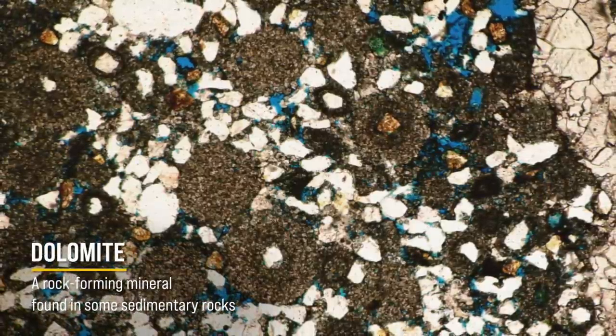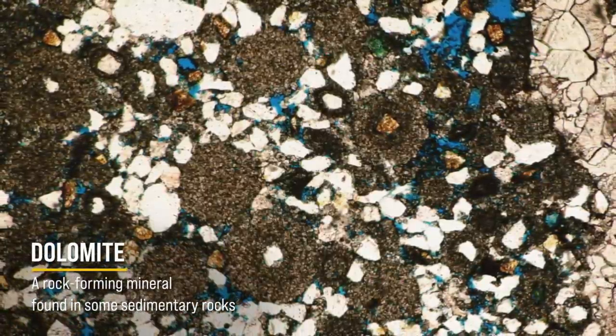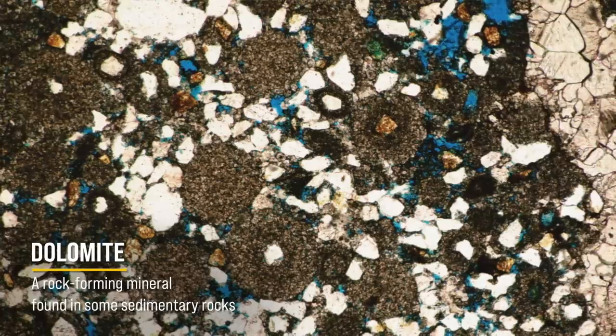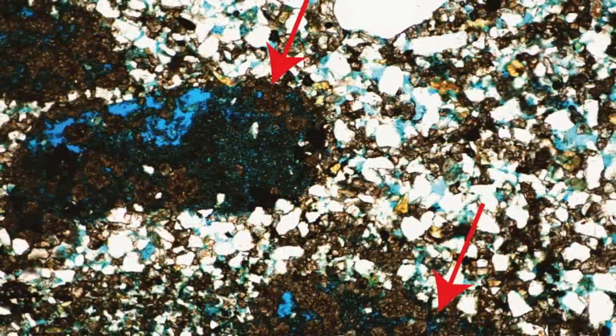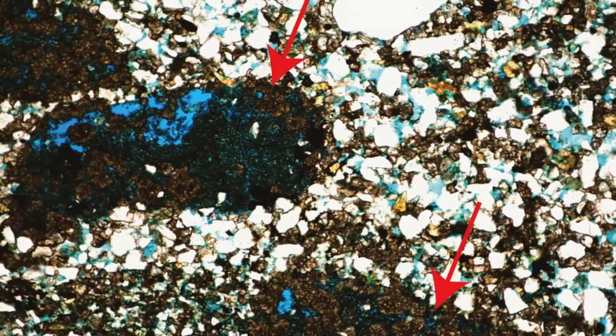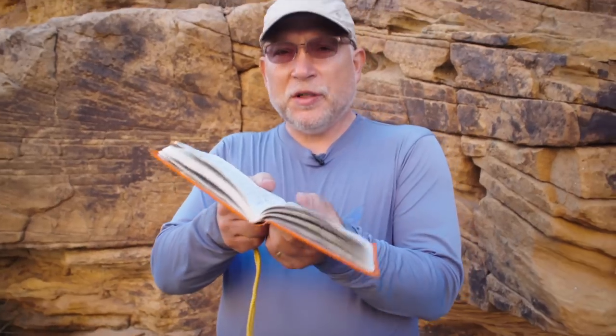Another mineral we found that was a bit of a surprise was dolomite. We found dolomite ooids — little BB-sized balls of dolomite — in the rock. In some places we found dolomite cement, dolomite clasts, and in some places even beds of dolomite about that thick. Dolomite is a marine mineral; it doesn't form readily in large quantities in a desert setting. It's solely a marine type of mineral.